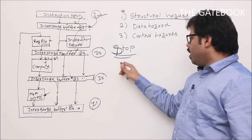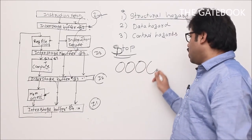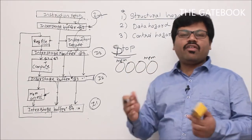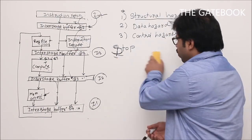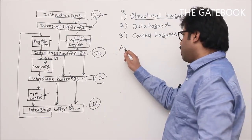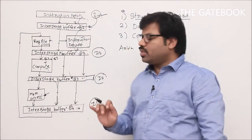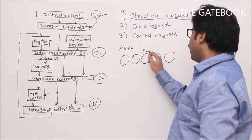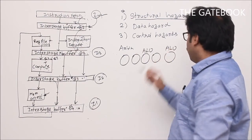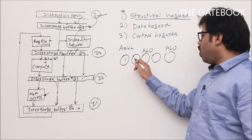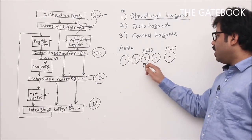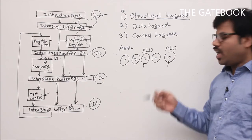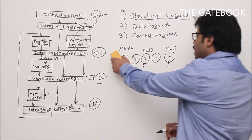The solution is to have separate memories: an instruction memory with its own address and data buses, and a data memory for the memory access stage. With two independent memory units, there is no clash — the instruction fetch unit always deals with instruction memory and the memory access stage always deals with data memory, so both can work simultaneously without conflict.